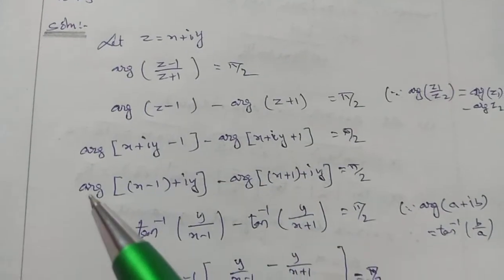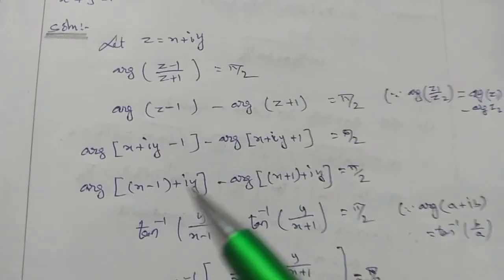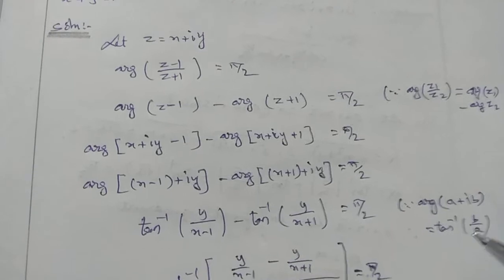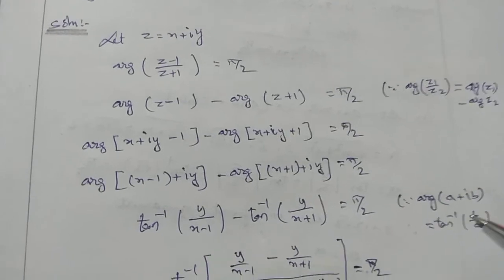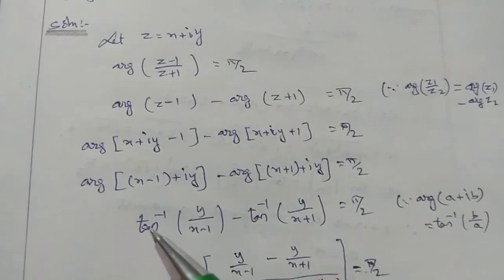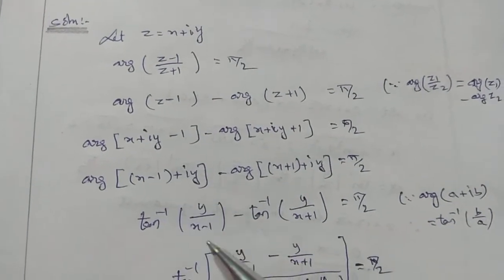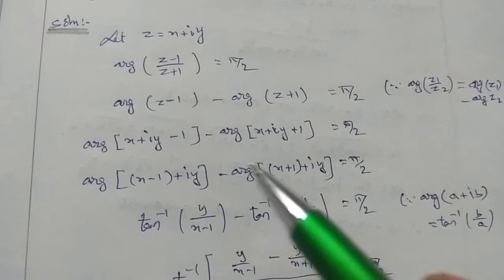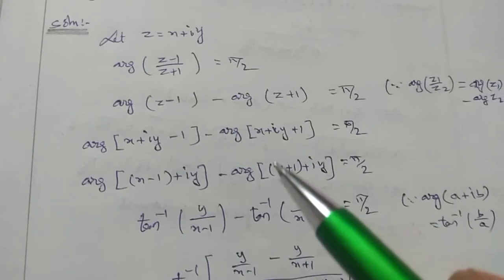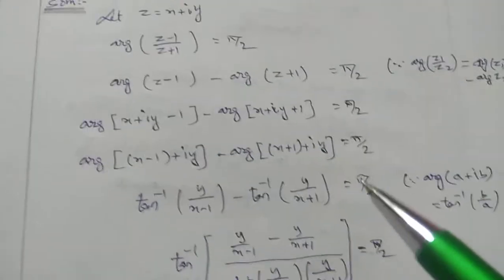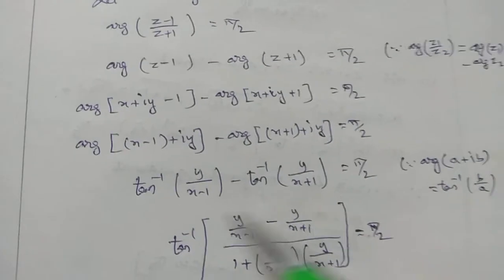Using the formula: argument of (a plus ib) equals tan inverse of b by a. So we get: tan inverse of y by (x minus 1) minus tan inverse of y by (x plus 1) equals pi by 2.